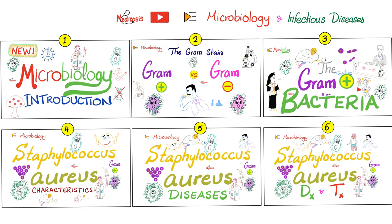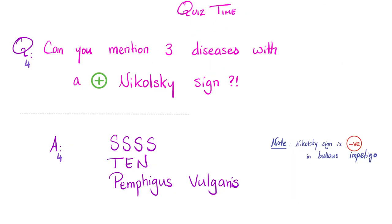Please watch these videos in order. Let's start by answering the question of the previous video: can you mention three diseases with a positive Nikolsky sign? Staph scalded skin syndrome, toxic epidermal necrolysis, and Pemphigus vulgaris. Of course there are others, but please note that Nikolsky sign will be negative in bullous impetigo.